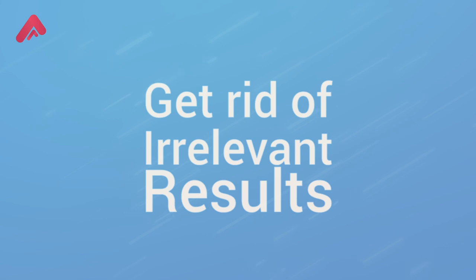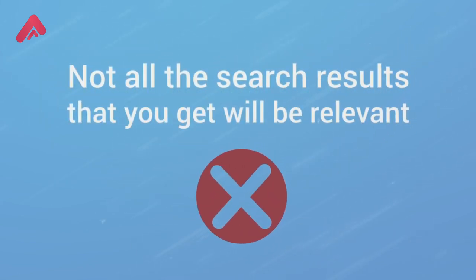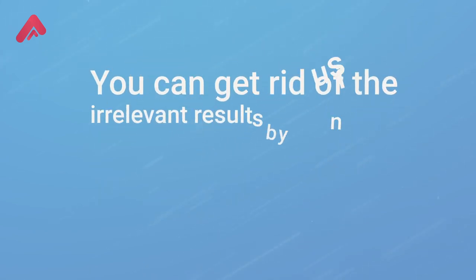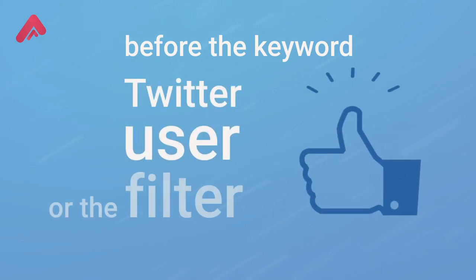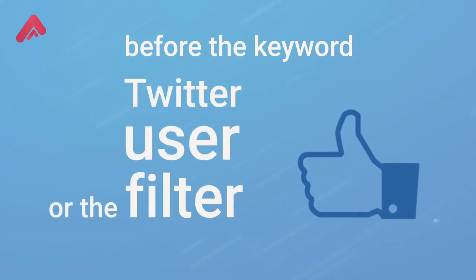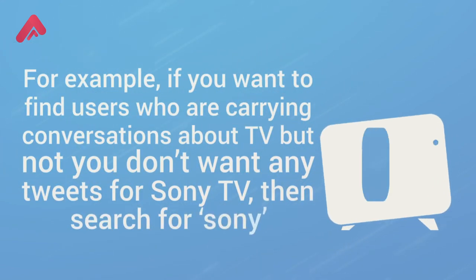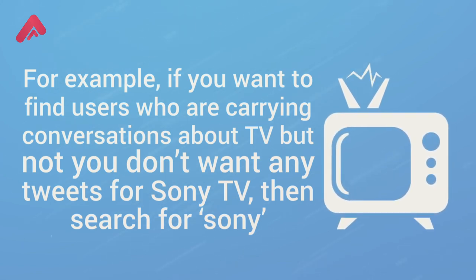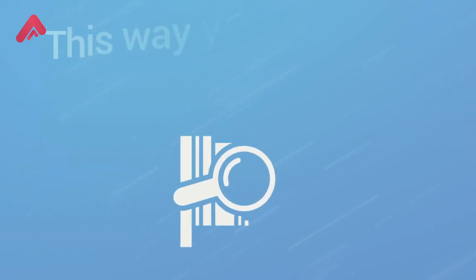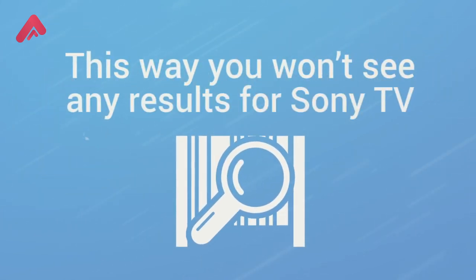Get rid of irrelevant results. Not all the search results that you get will be relevant. You can get rid of irrelevant results by using the dash symbol, called the exclusion filter, before the keyword, Twitter user, or the filter. For example, if you want to find users carrying conversations about TV but don't want any tweets for Sony TV, then search with a dash before Sony. This way you won't see any results for Sony TV.